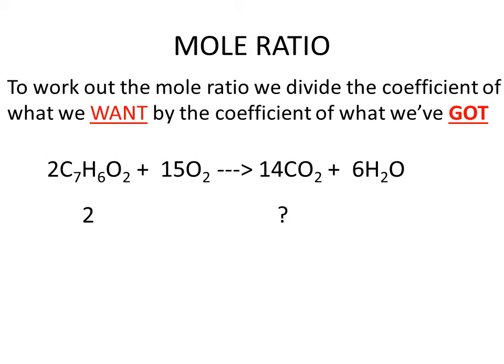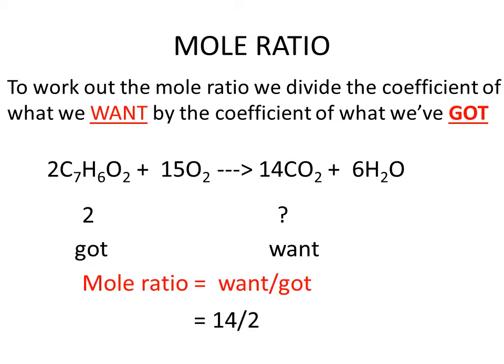To express this mathematically, we can say that the mole ratio is calculated by taking the coefficient of what we want and dividing it by the coefficient of what we know. So in this case, if we have two moles of reactant and we want to know how much carbon dioxide is produced, we write this directly under the equation. To calculate our mole ratio, we divide the coefficient of what we want — the carbon dioxide — by the coefficient of what we've got — the reactant. So our mole ratio, in this case, is just 14 divided by 2, which gives us 7.